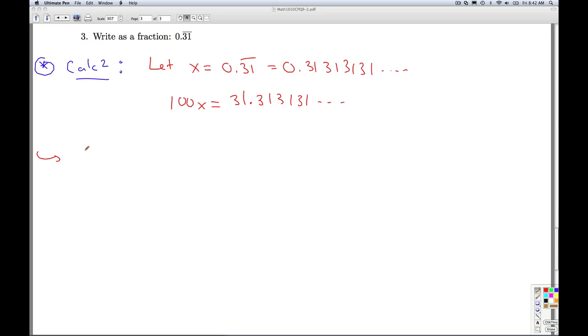So, if I line these things up, 100x is 31.3131, etc. x itself is 0.3131, etc. You just subtract the equations. 100x minus x is 99x. And can't you just line up the decimals and cancel these out? And the answer is yes, but there's a calculus theorem that tells you you can do that. Divide both sides by 99, and you're back to where you started.